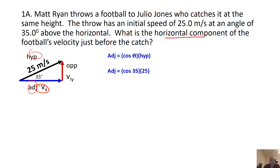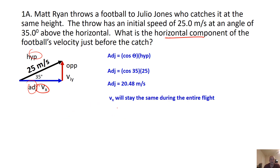If you plug in your digits, make sure you're in degrees and not radians — if you're in radians you're going to get a different answer. The answer here is 20.48 meters per second. That was the initial velocity, but that's also the velocity right before it's caught, because VX is not going to change throughout the entire flight in projectile motion.